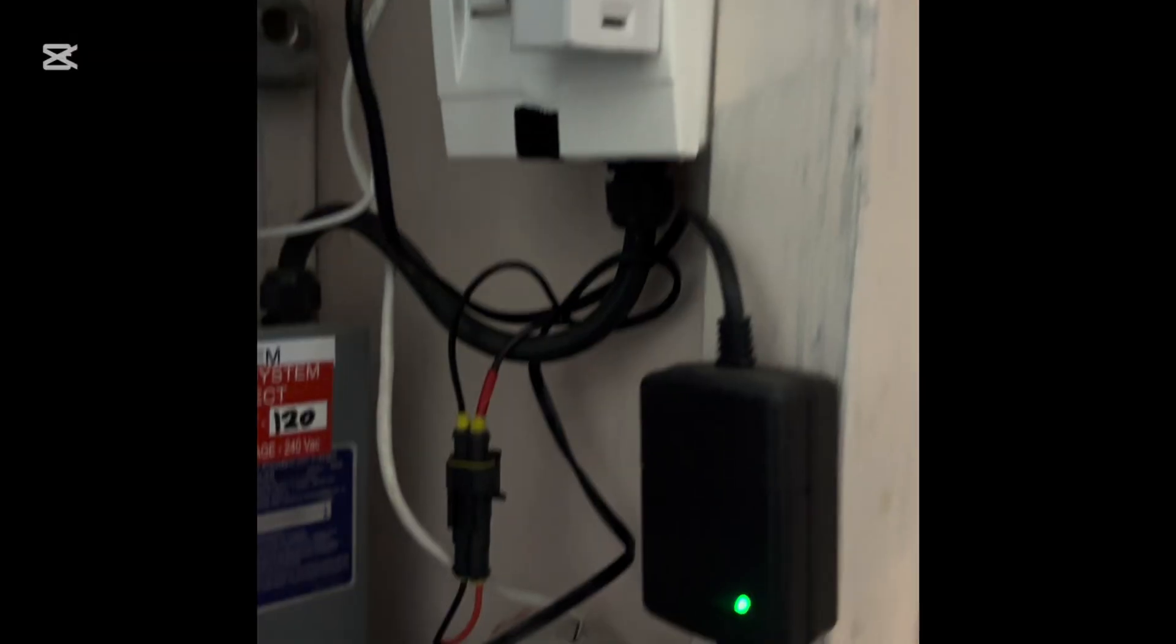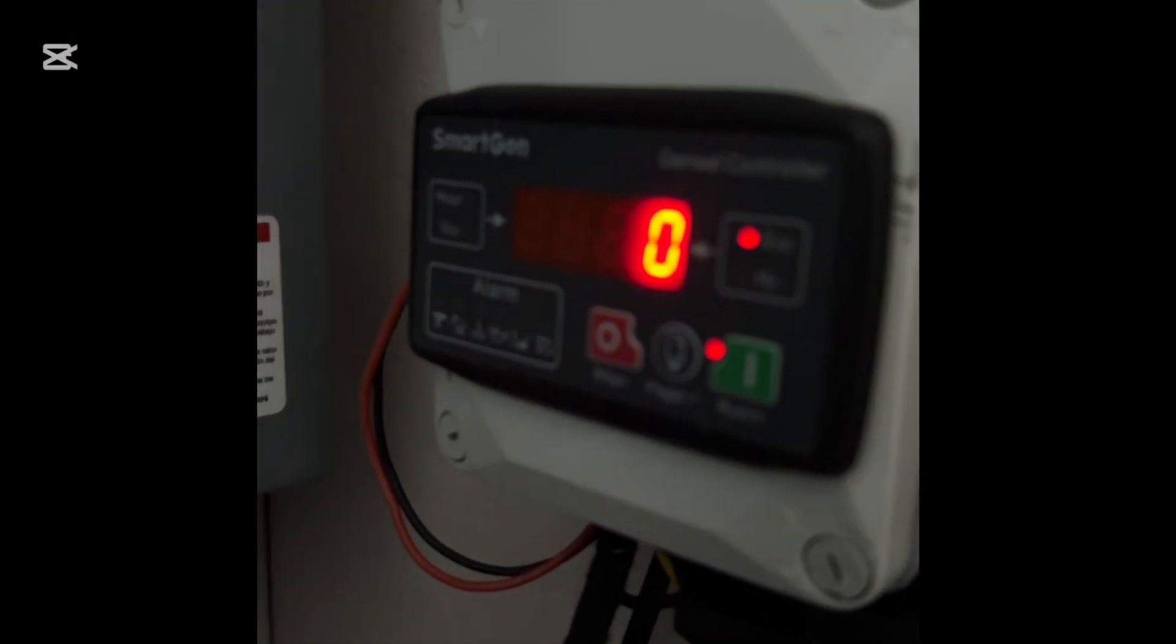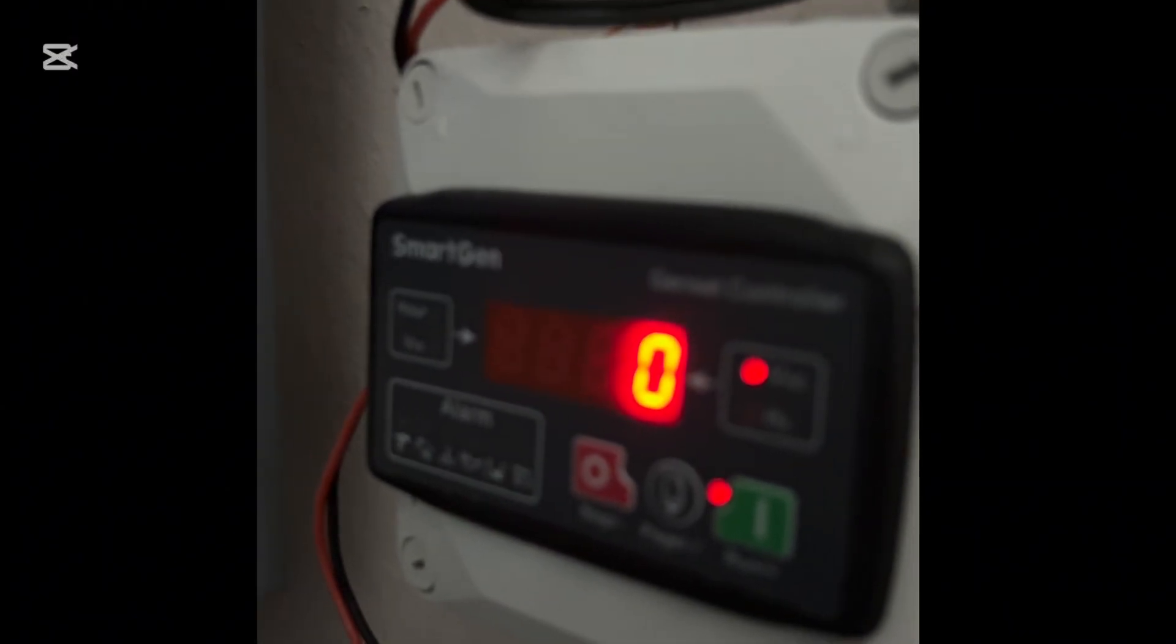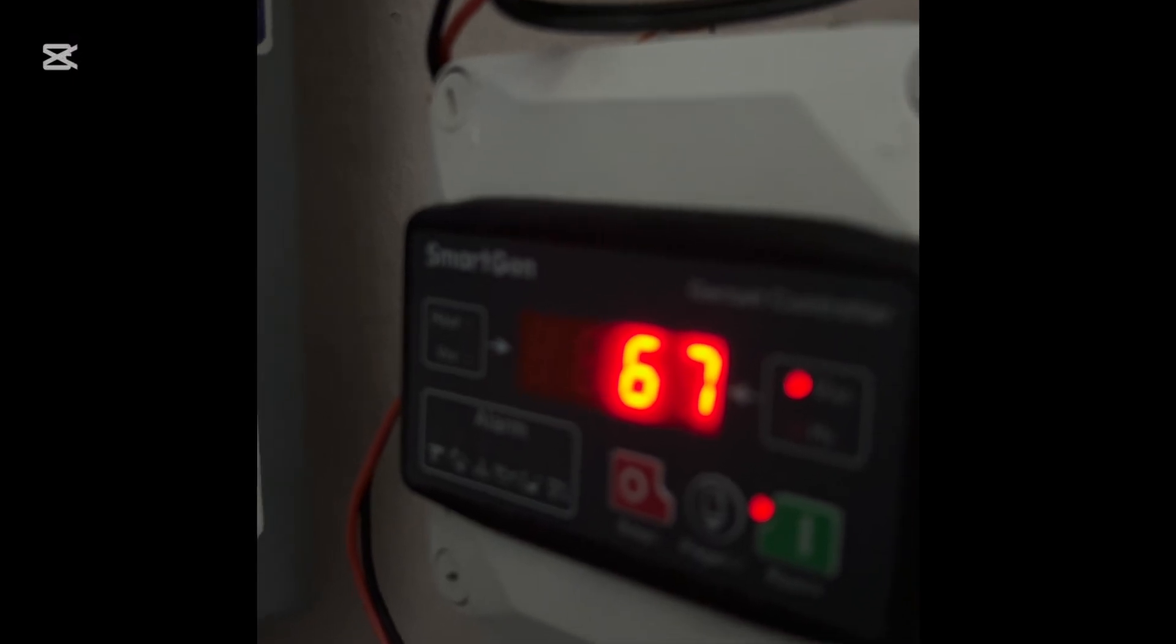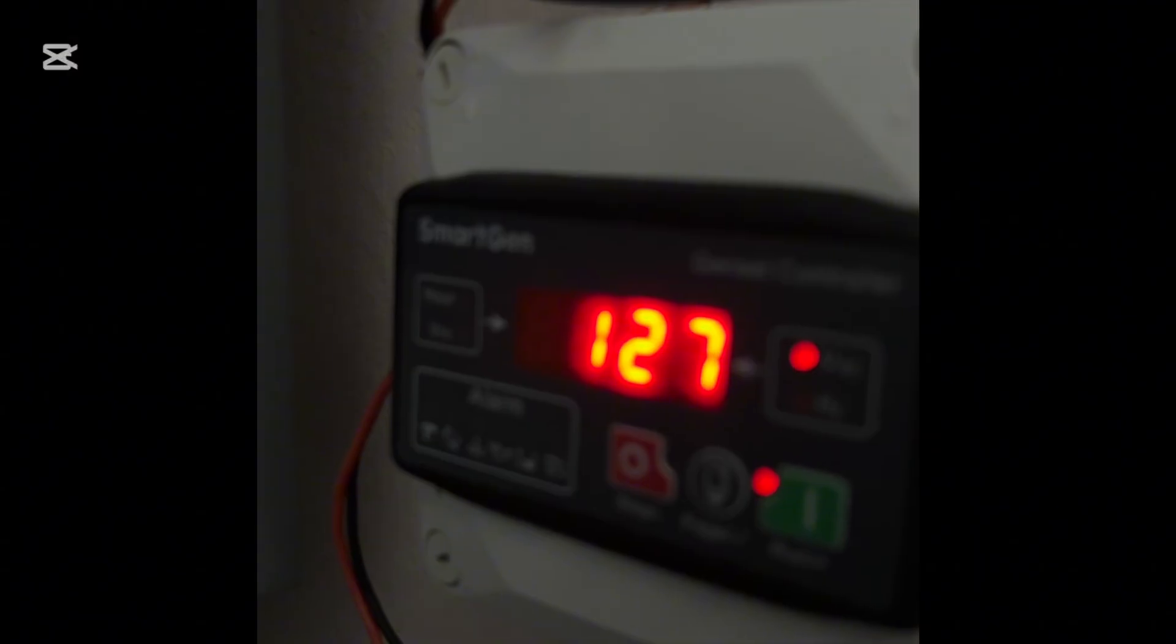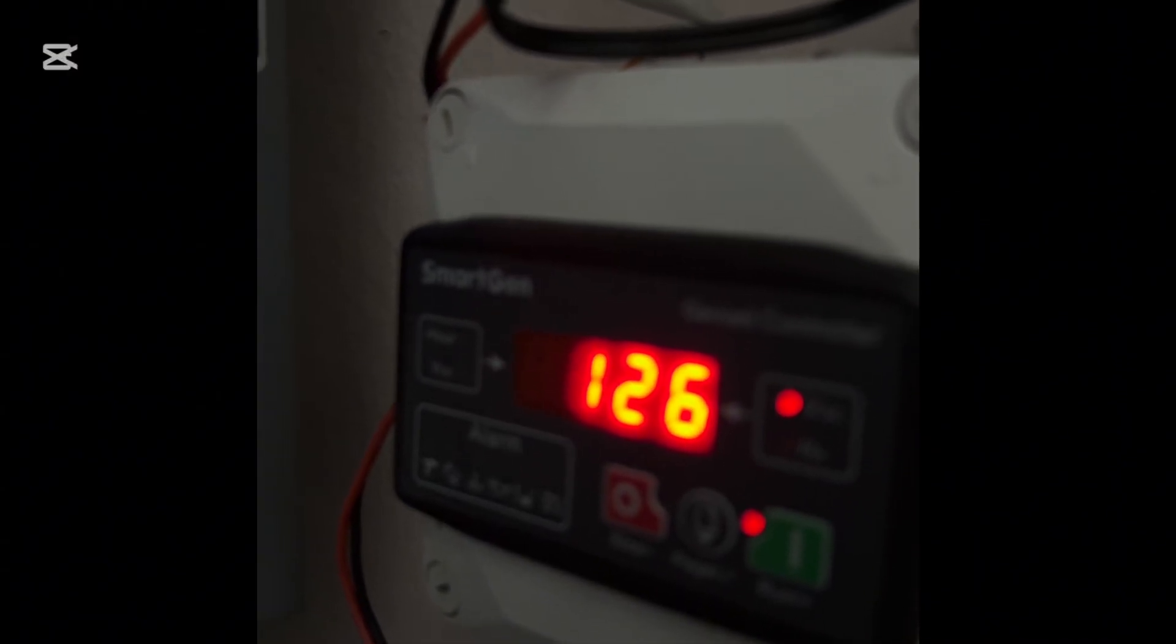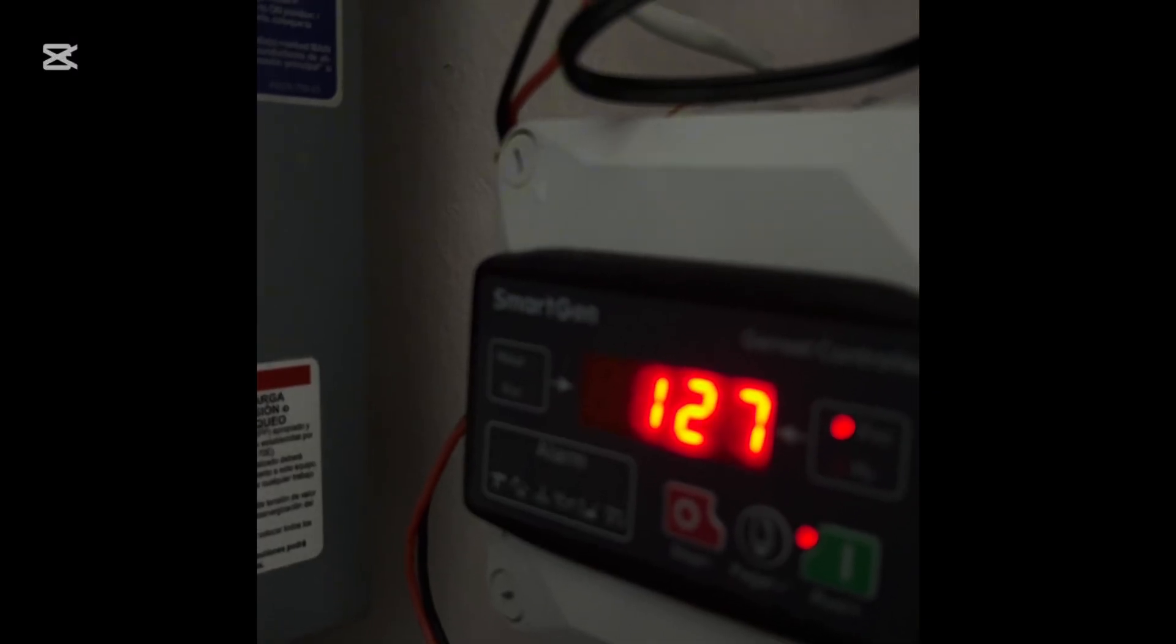You have the signal. Now the generator controller is going through its startup procedure which waits two seconds, then sends the signal to the starter. Here the generator is kicked in and after three seconds it disconnects the starter. Now we have voltage, so we have 126 volts coming from the generator and everything is working as you can see on my inverter here.